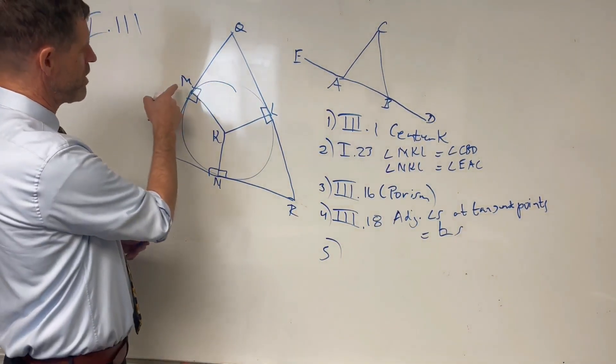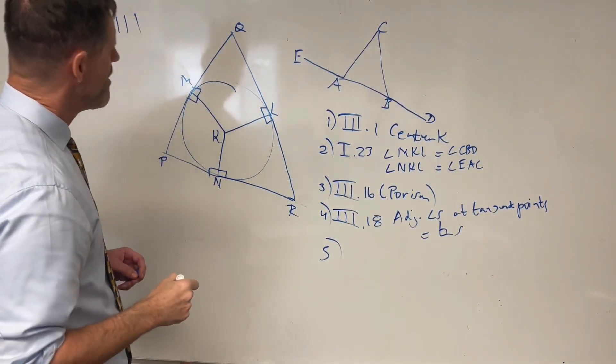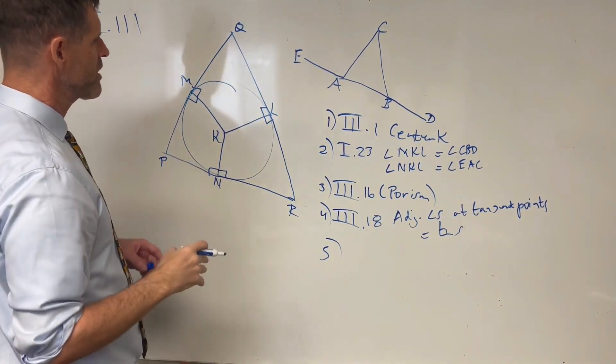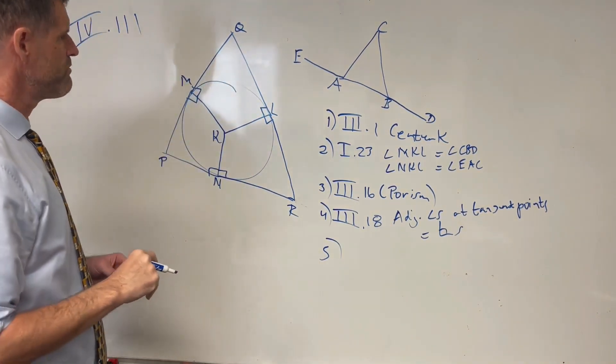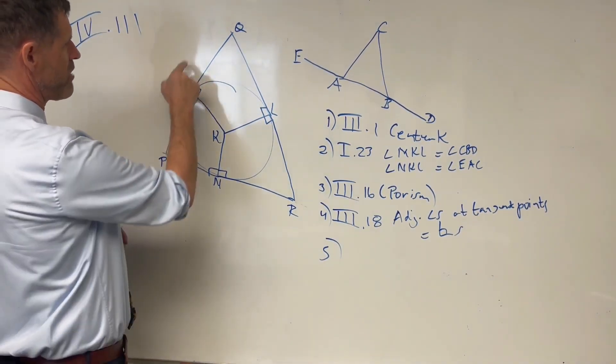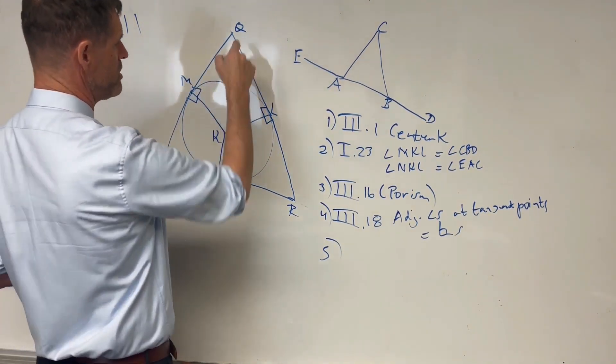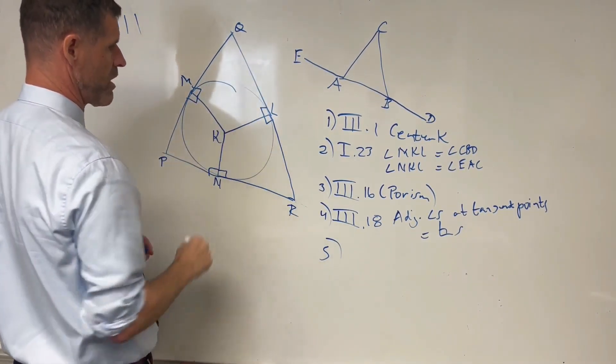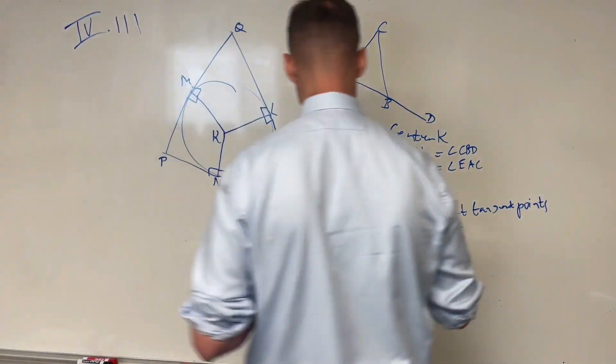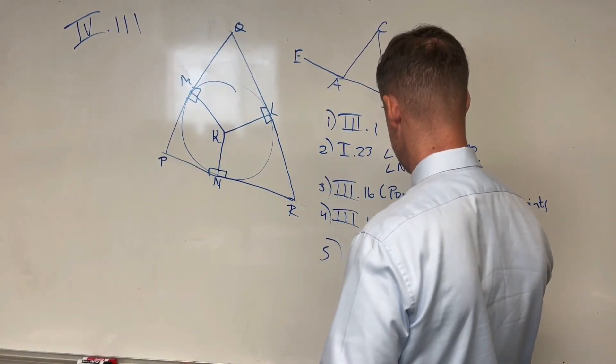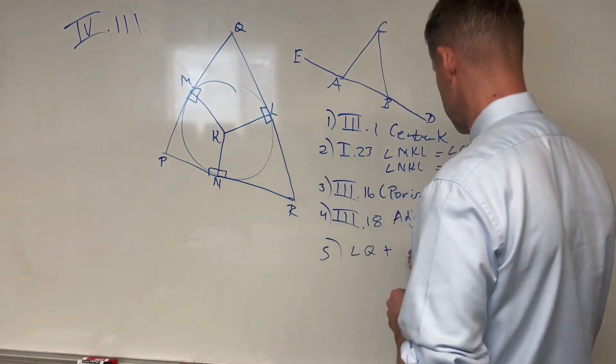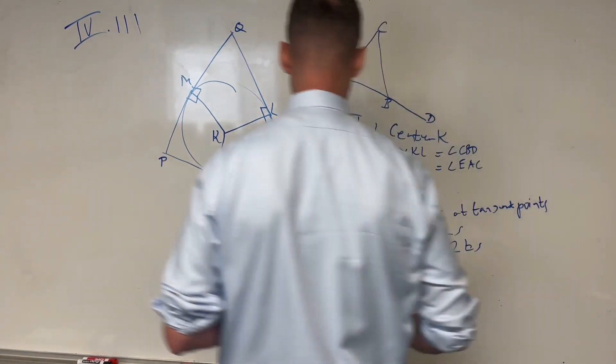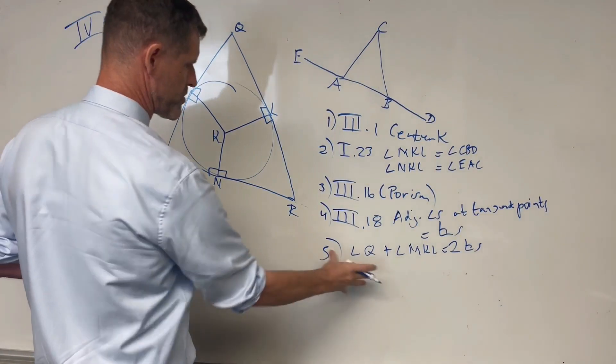And if we look at our quadrilateral MKLQ, Euclid says that in as much as we can divide this figure in the two triangles, we then know that the four angles are equal to four right angles. And since the angle KMQ is a right angle, and the angle KLQ is a right angle, that means that the remaining angles Q and MKL are equal to two right angles. So angle Q plus angle MKL equal two right angles.